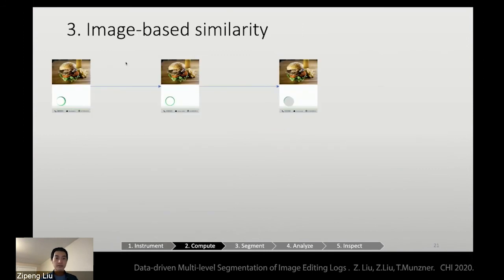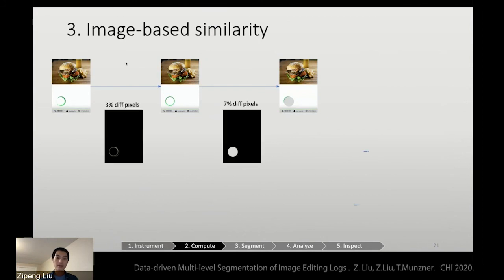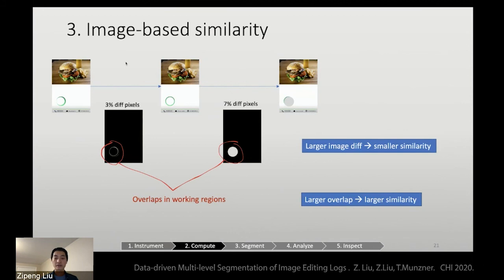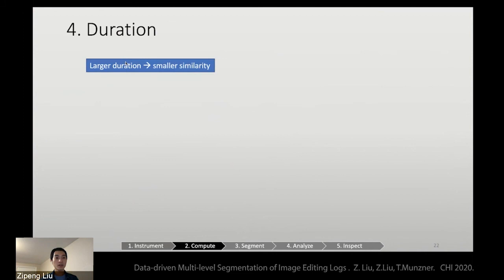Next is image-based similarities. You have all the snapshots of each step the user did. And then you can compute how many pixels are different between the screenshots. You can conjecture that if the image diff is larger, events have smaller similarity. You also find out overlaps in the working regions. And conjecture that if there is larger working region overlap, events will have larger similarity. And finally, duration is just the difference between two timestamps. We think that larger duration will imply smaller similarity.